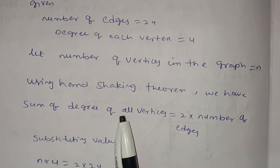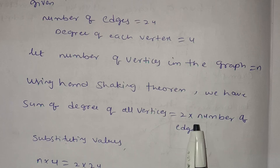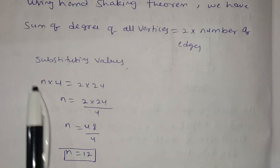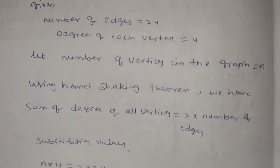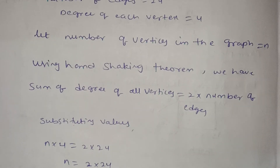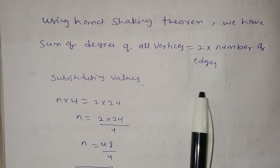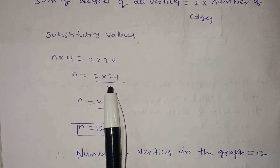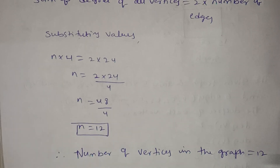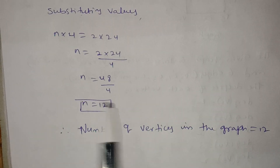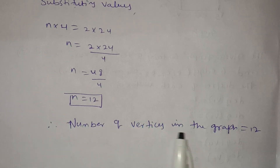The sum of all vertex degrees equals 2 times the number of edges. So n times 4 equals 2 times 24, which gives n times 4 equals 48. Therefore n equals 48 divided by 4, so n equals 12. The number of vertices in the graph is 12.